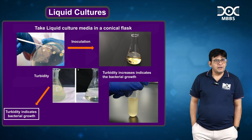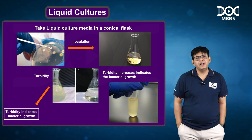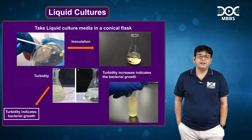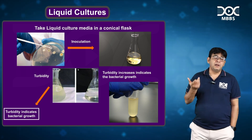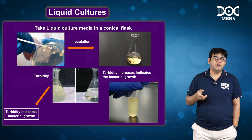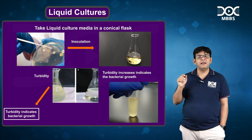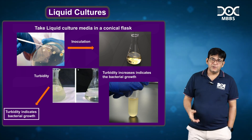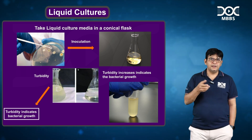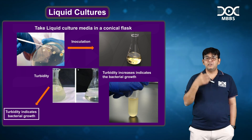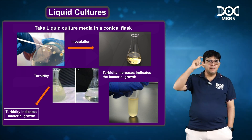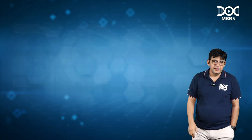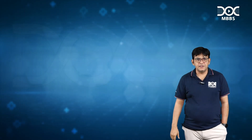By turbidity you will be able to know that something is growing in that particular culture media. This is a disadvantage of liquid culture media — the disadvantage is that you can't tell which colonies are coming, what is the size, what is the shape, because only turbidity can be gathered from that. So that is the story of liquid culture.